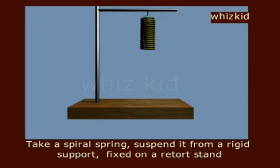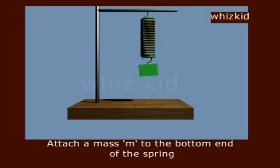Simple Harmonic Motion Spring Mass System. Take a spiral spring, suspend it from a rigid support fixed on a retort stand. Attach a mass M to the bottom end of the spring.